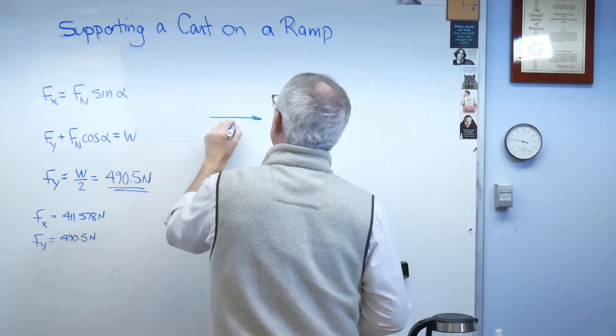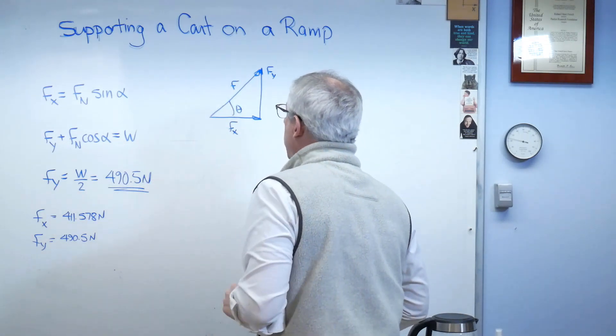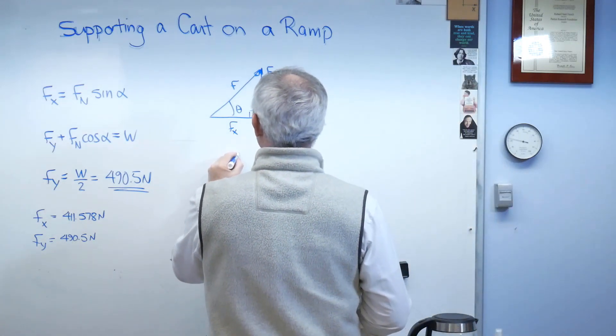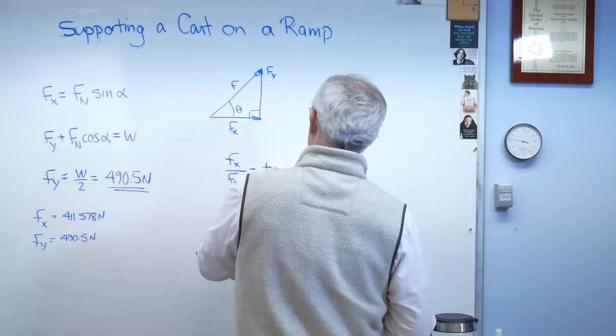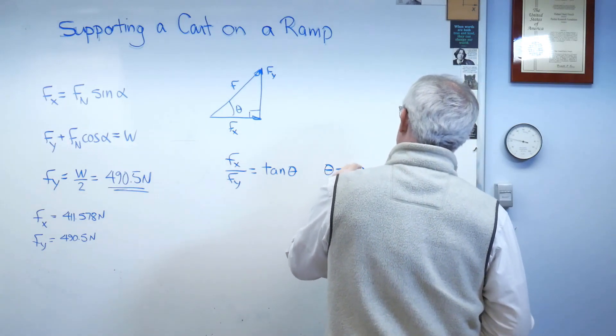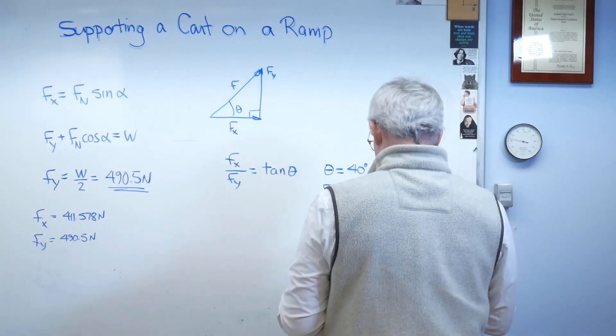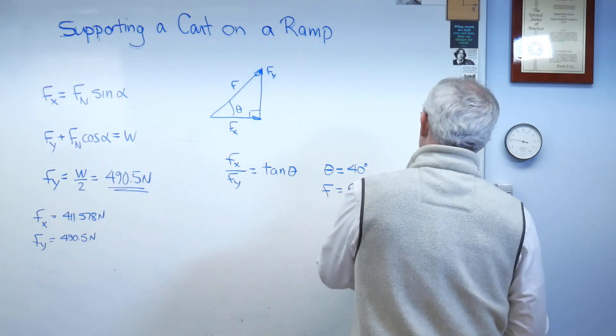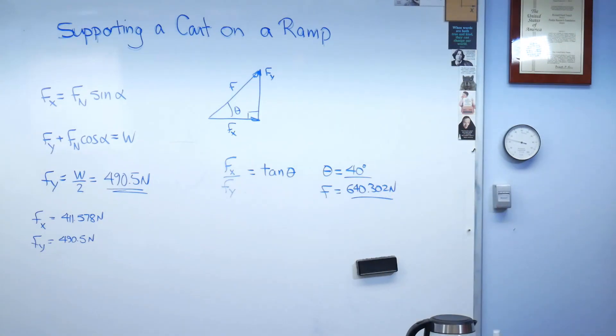Well, I'm going to erase right here again to make some room on my little board. If I figure out, let's see, let's draw this force triangle. There's F and there's theta. That's perpendicular right there. If I work this out, F_x over F_y is tangent theta. Well, you solve that and you get theta equals 40 degrees. And if you use the Pythagorean theorem, you wind up with 640.302 newtons.